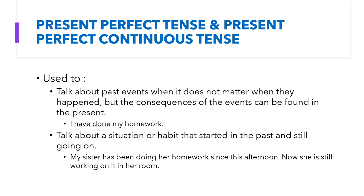For example, 'I have done my homework.' I did my homework in the past, but there is an effect now — I can continue with another activity, or I can submit my homework because I have done it. The second use is to talk about a situation or habit that started in the past and is still going on. For example, 'my sister has been doing her homework since this afternoon' — now she is still working on it in her room. For this kind of situation, we use present perfect continuous tense.